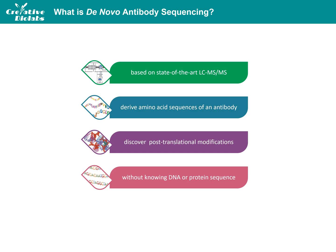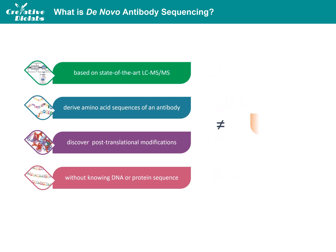This differs from sequence confirmation by peptide mapping, in which the protein sequence is already known and is used as a guideline to confirm the sequence. De novo antibody sequencing is a valuable tool, enabling the production of a commercial recombinant antibody with useful properties, and is faster than raising new antibodies from immunized sources.